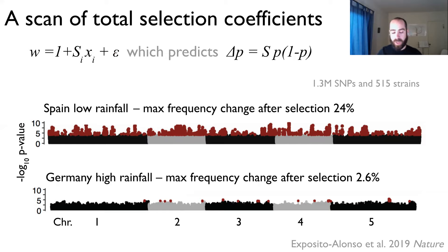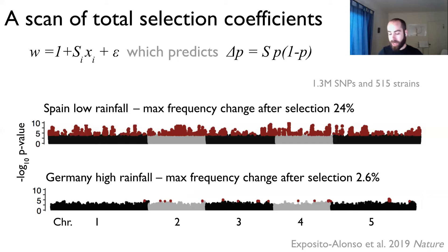In these Manhattan plots, I am showing the significance of the selection coefficients to be different from zero for all SNPs in the genome across the five chromosomes. In red, we have the SNPs that pass the Bonferroni threshold. We see in Spain and low rainfall over 6,000 SNPs passing the Bonferroni threshold all over the genome. So selection is highly polygenic, with the top SNPs changing as much as 25% in allele frequency.